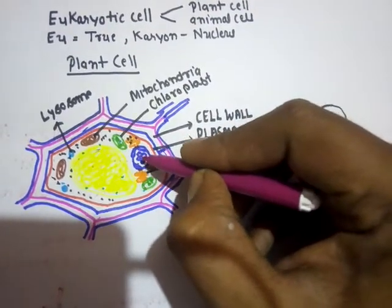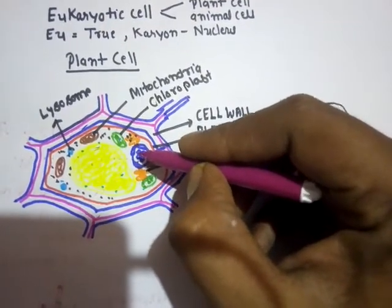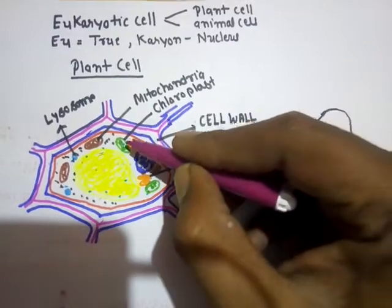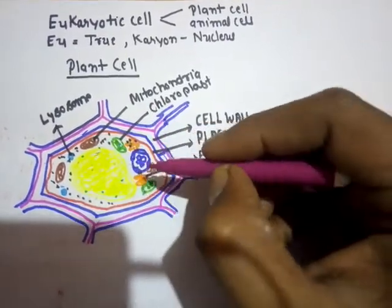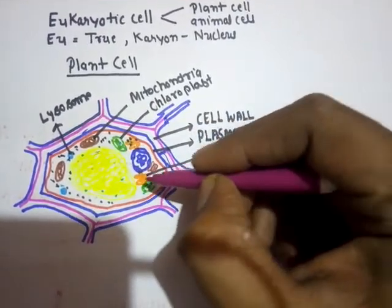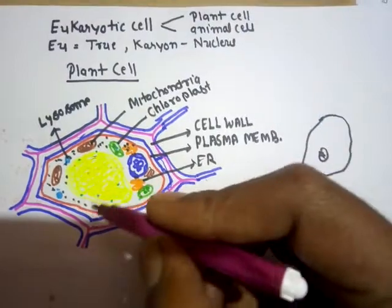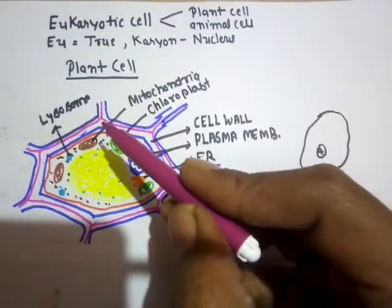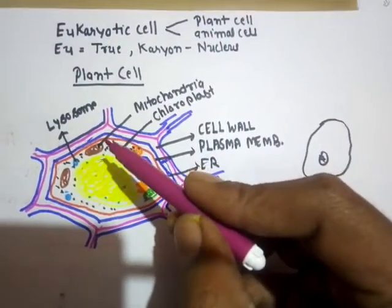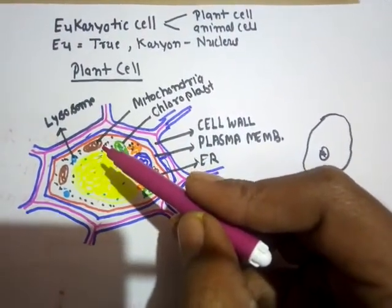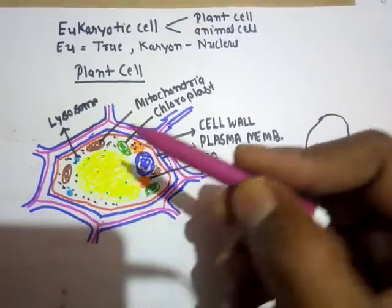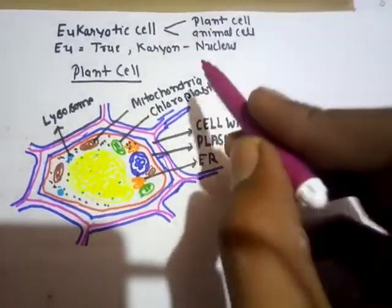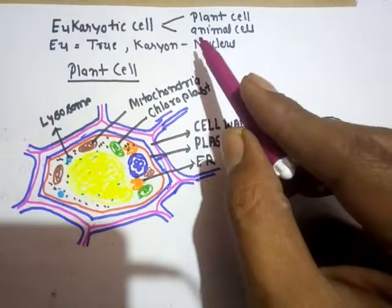The nuclear membrane separates the nucleoplasm inside the nucleus from the outer cytoplasm. So we can say a definite nucleus is present. You can also see other membrane-bound organelles like mitochondria, chloroplast, lysosomes, Golgi body, and endoplasmic reticulum. The cell with a definite nucleus and other membrane-bound organelles is called a eukaryotic cell.